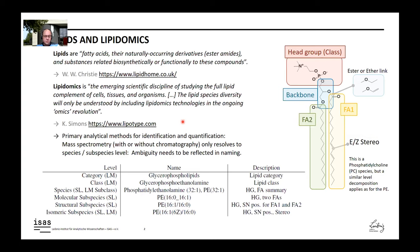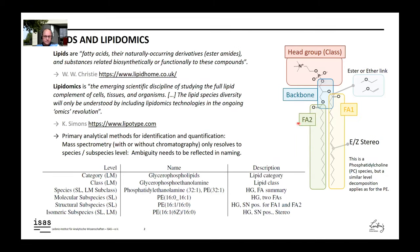However, mass spectrometry usually only resolves lipid structure to the species or subspecies level, and ambiguity thus needs to be reflected in naming. Lipids usually consist of multiple so-called building blocks: mainly the head group, which is equivalent to the lipid class — for example, glycerophosphoethanolamine. Then you have the backbone, which links the head group to the fatty acyl chains, which are long carbon carbohydrate chains. There are also different possibilities for linking from the backbone to the fatty acyl, either by an ester link or by an ether link. In the fatty acyl chains, you can have multiple double bonds and double bond positions, and these can have different configurations. All of this can be reflected on multiple levels, depending on the structural knowledge gained from mass spectrometry.